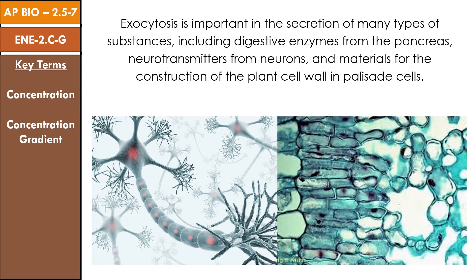Exocytosis is important in the secretion of many types of substances, including digestive enzymes from the pancreas, neurotransmitters from neurons, and materials for the construction of the plant cell wall in palisade cells.